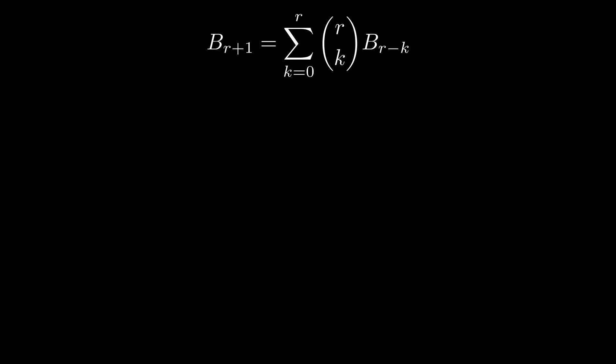Let's look at a quick bell identity and make sure we understand what bell numbers count. b sub r plus 1 is the sum from k equals 0 to r of r choose k times b sub r minus k. How can we show this combinatorially? By the definition of bell numbers, the left hand side counts the number of ways of putting r plus 1 prizes into bags.